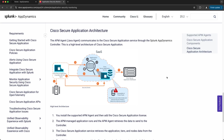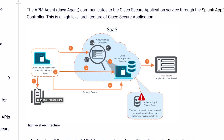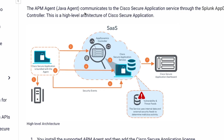To better understand it, it's helpful to take a look at the high-level architecture. Over here you have your infrastructure, and on that infrastructure you're deploying your application as well as the Splunk AppDynamics APM agents that are bundled with Cisco Secure Application. Once you've deployed your APM-managed application and it's running, the APM agent will retrieve data and send it to the AppDynamics controller. Once data is sent to the controller, Cisco Secure Application then retrieves data like application tiers and nodes from the controller.